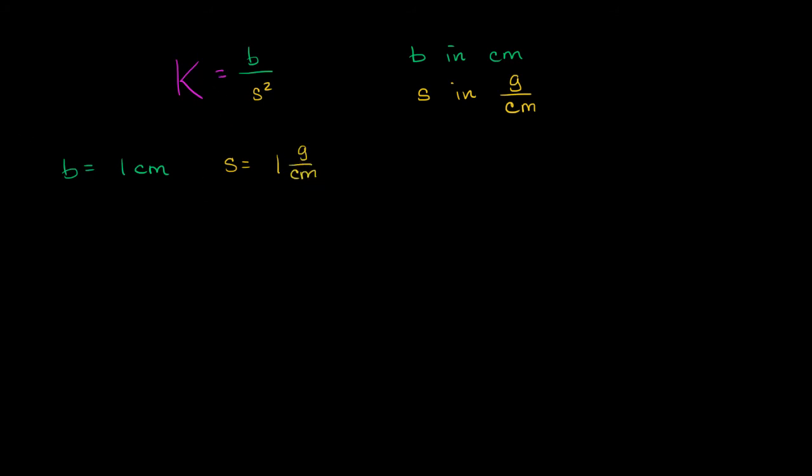And let's say that s is 1 gram per centimeter. So we know that K is going to be equal to 1 centimeter, that's b, over 1 gram per centimeter squared.